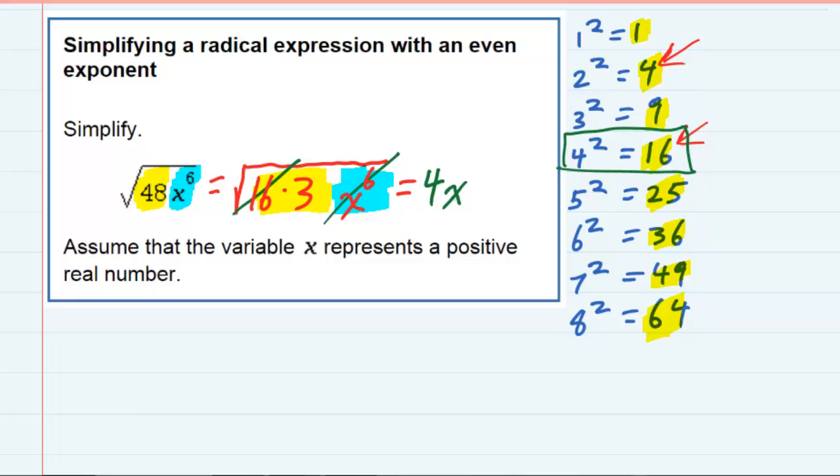So instead of x to the sixth, it's going to be x to the third. And then I still have the 3 underneath the radical. So the 16 came out as a 4, and the 3 stayed inside. And the x to the sixth came out as an x to the third, taking half of it.